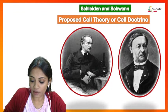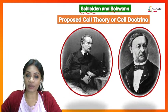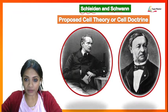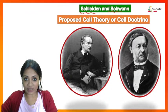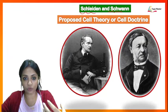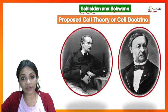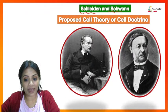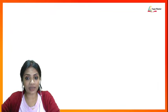Two scientists named Schleiden and Schwann — one being a botanist, one being a zoologist — together proposed a theory applicable to almost every cell, also called the cell theory or cell doctrine. This theory defines the conditions a structure must fulfill to be called a cell. When a cell theory has been made, we need to examine what exactly are the pointers of this cell theory.